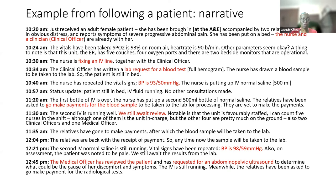Twenty minutes later, vital signs were repeated and the blood pressure was noted to be 93/50 — low for an adult. The nurse started a drip of normal saline. The patient was still in the bed with fluids running. A blood test had been requested, and the relatives were told they needed to go make payment for the blood sample. This took a while — about an hour and a half after arrival, the sample was finally taken to the lab. Fluids were still running, blood pressure was still low.